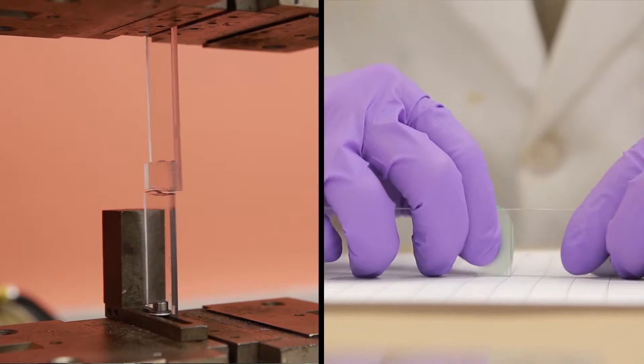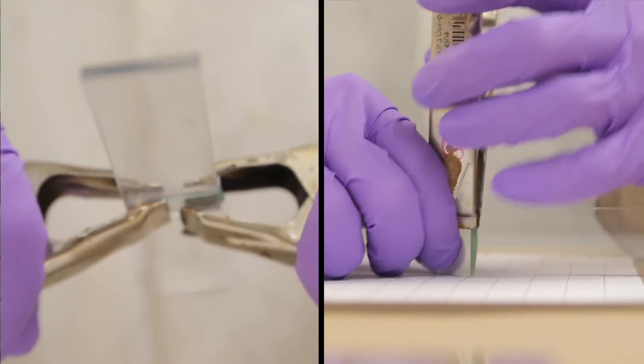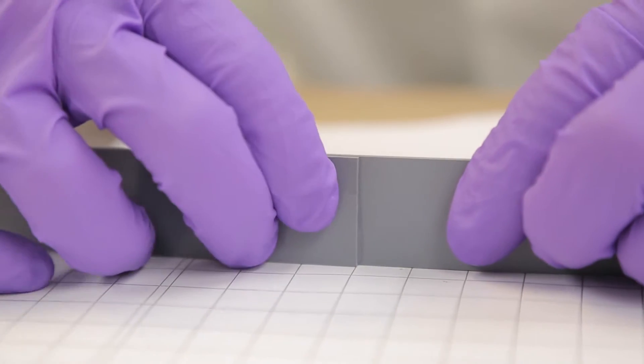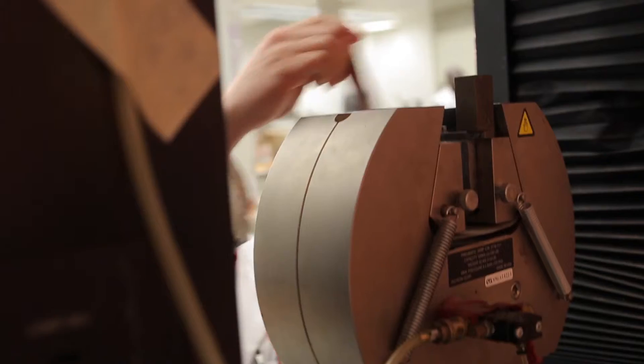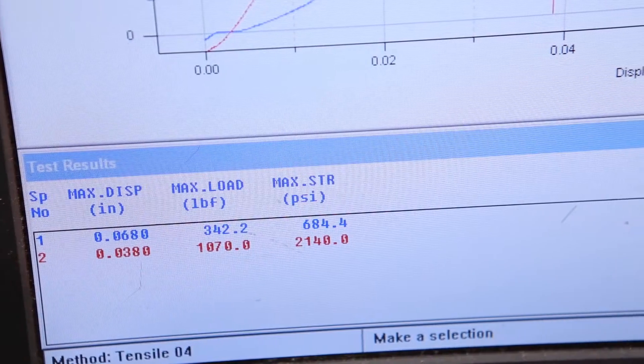Adhesive shear strength tests are important for characterizing the structural integrity of a bond between two surfaces. One standard method for shear strength testing calls for the bonding of two test specimens overlapped by a specified area. The assembly is secured in a mechanical properties tester and is pulled in shear until failure. We record the load at breakpoint and calculate the corresponding shear stress.